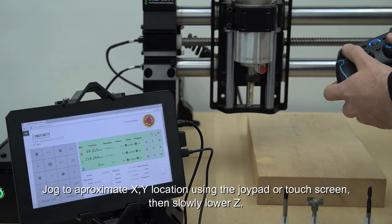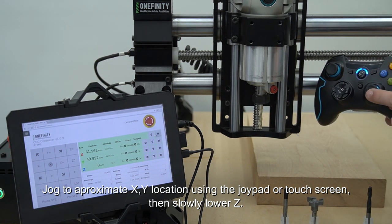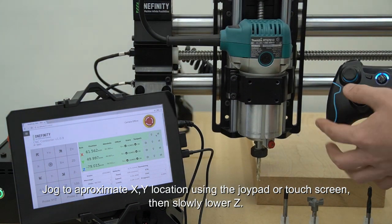To manually set zero for the Onefinity, jog to the approximate X, Y location using the joypad or touchscreen, then slowly lower your Z.